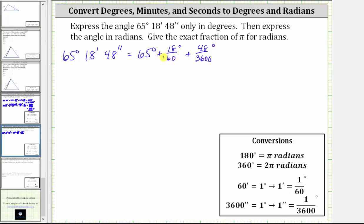Now that we have everything in degrees, let's simplify these two fractions. Let's simplify 18/60ths. To simplify 18/60ths, we divide the numerator and denominator by six. This simplifies to 3/10ths.